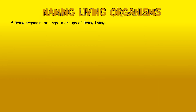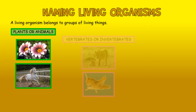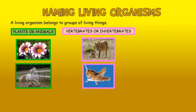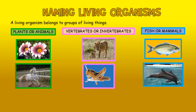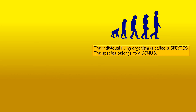Naming living organisms. A living organism belongs to different groups of living things such as plants or animals, vertebrates or invertebrates, fish or mammals. The individual living organism is called a species, and the species belongs to a genus.